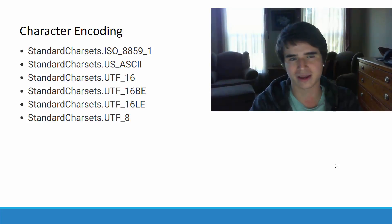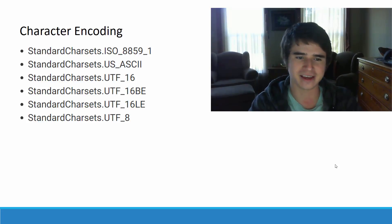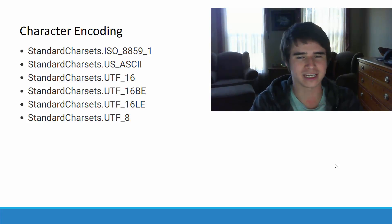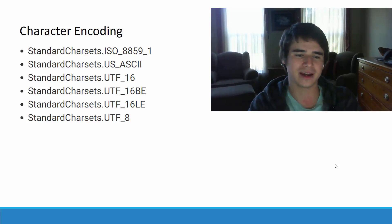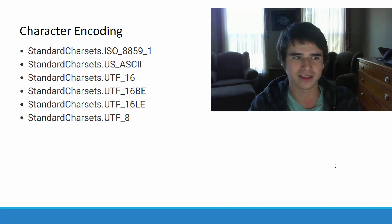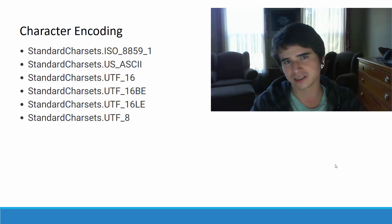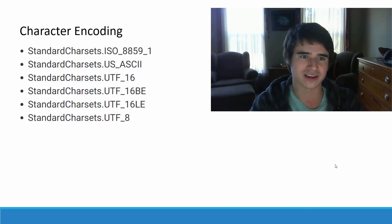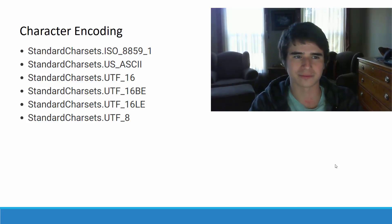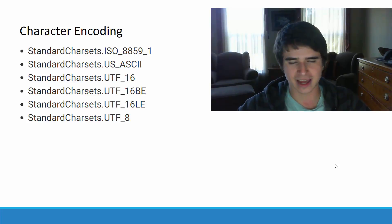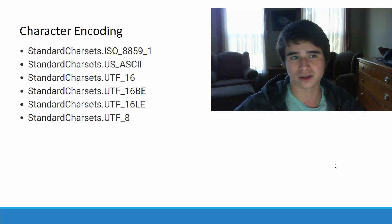For example, Mac might use one default encoding, Linux might use another, Windows uses another. So if we were to write a program on Windows, we might want to specify that we want to save the file using UTF-8. When we load that program on Mac, our program can load that file using UTF-8, and that way we know the character encoding is consistent. When we use other objects like the Scanner or the PrintStream, it'll just use the default encoding type for that operating system, which is more platform-specific.